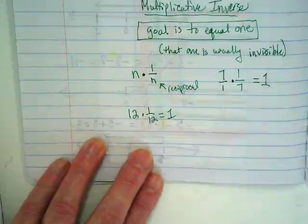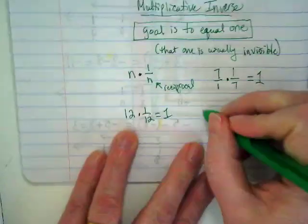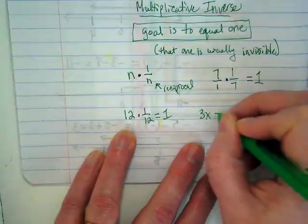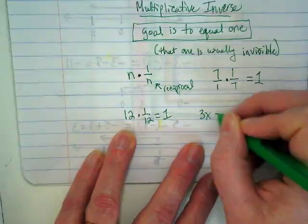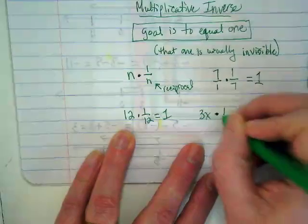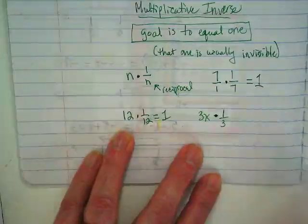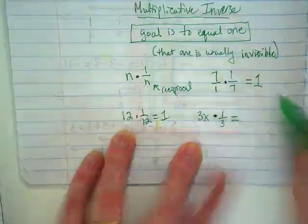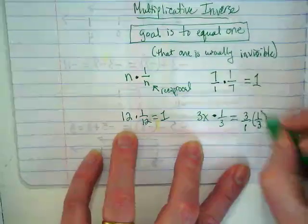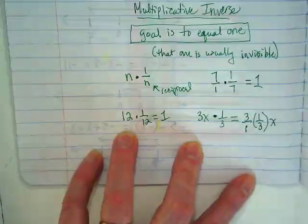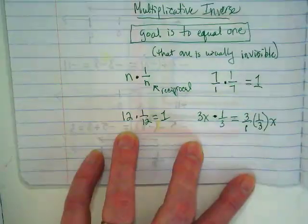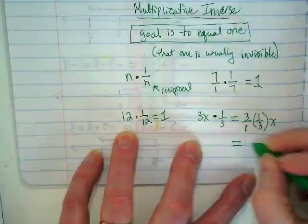How does that work in algebra? This is where we leave them invisible. If I have something that says like three X and I want to multiply it by its reciprocal to get the X by itself, I would multiply that times one over three. And I would end up with three over one times one over three. And then that X is just still there. This three over one and this one over three, or one times three, gets me three over three, which is one. And we would show this as just X.